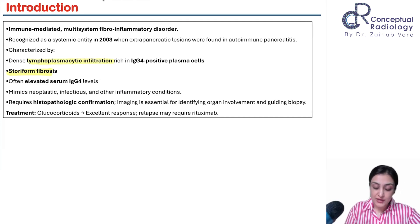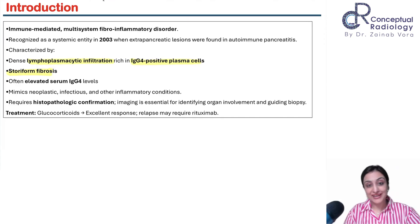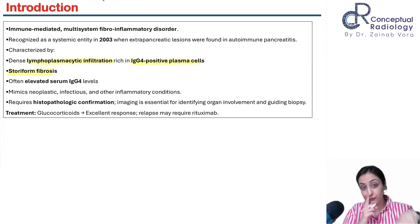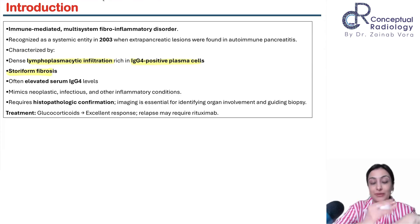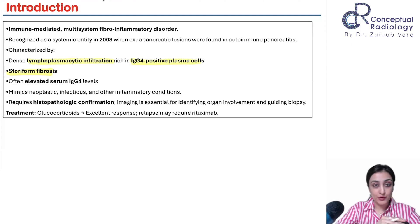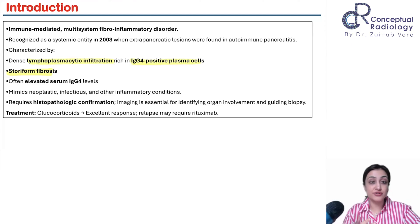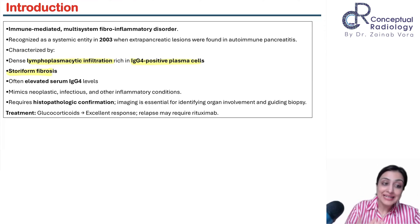Plasma cells make antibodies, and these antibodies are IgG4. So essentially, multiple organs are involved with inflammation in the form of plasma cells which make IgG4, along with storiform fibrosis. All of these pseudotumors from head to toe are now clubbed under IgG4 — that is the unifying link.